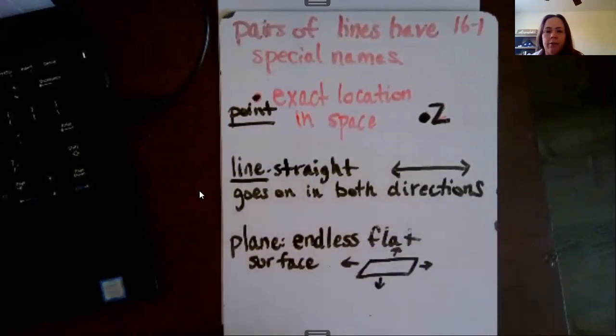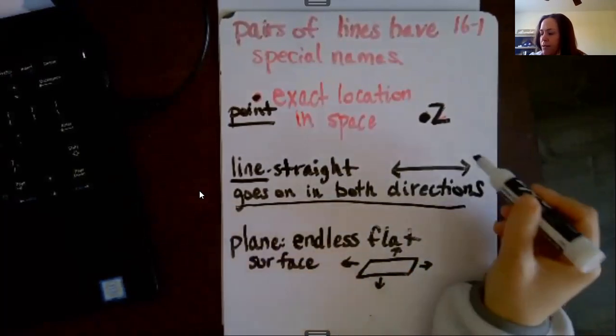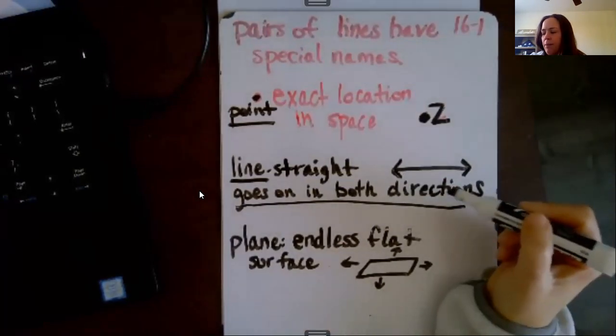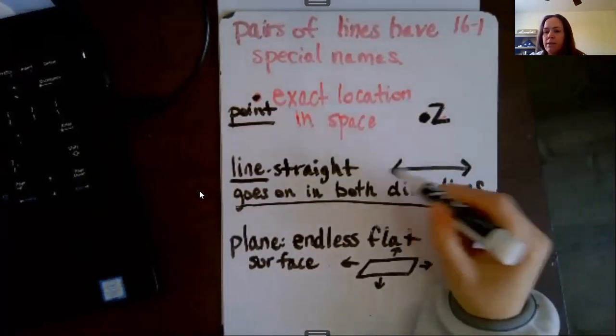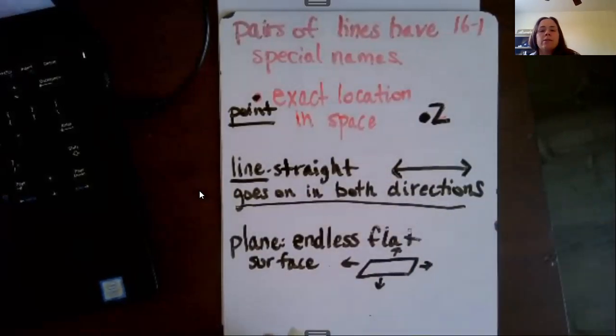Obviously this looks like a number line that we use all the time. It's just called a line, and the interesting thing about a line is that it goes on in both directions infinitely. The arrows on the ends make it a line, which is going to be important later when we talk about line segments. This means it goes on forever in that direction and goes on forever in that direction.